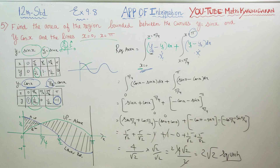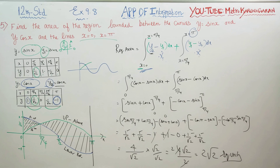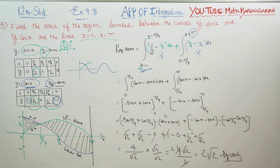The final answer is 2√2 square units — this is the area between the sine curve and the cosine curve from 0 to π. The limits are very important; you need to extend and add the correct values to π in the limit. The diagram is very very important for this type of problem.